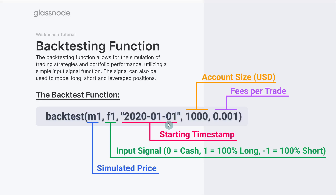We also have a starting timestamp — you'll find this in the function guide linked in the description below. Then there's the account size, which is essentially the portfolio value traded along the multiplication of the simulated price. If this value is $1,000, that amount will fluctuate via the multiple of price according to the input signal. Finally, there is a relative fee per trade — each time the volume changes a fee can be simulated. This can be set to zero for raw performance, but for strategies that jump in and out of positions, fees will start to build up.